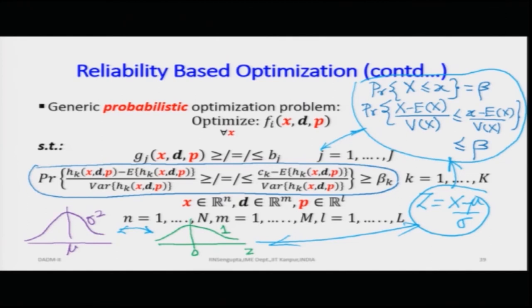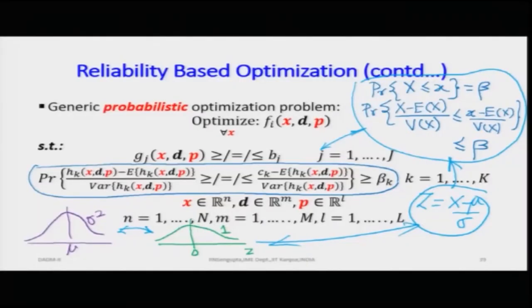However, life is not that simple — the normal distribution assumption may not hold in most real cases. If it does not hold, how do we solve it, and what problems do we face? This slide was made to show how the concept of normality plays a role in understanding reliability or robustness in the constraint problem.